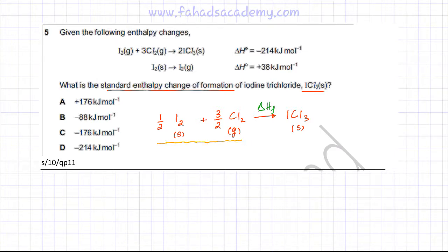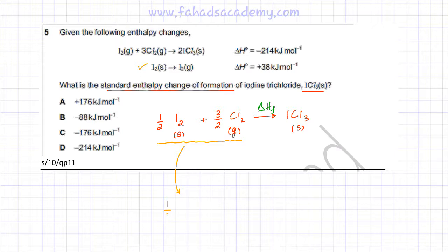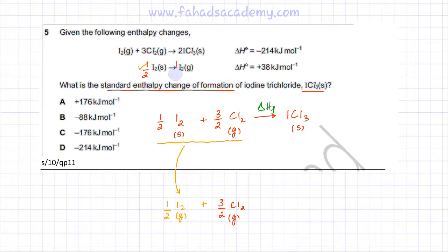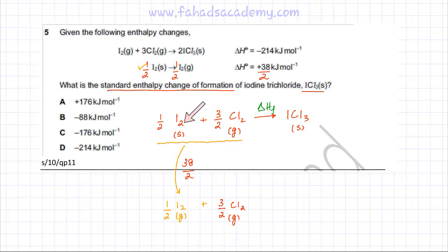Starting from the reactants, I'll use the second reaction first: iodine solid is converted into iodine gas. Since we have iodine solid in our reactants, I can convert that solid iodine into iodine gas. The 3/2 Cl₂ remains unchanged, as we're not doing anything with the chlorine molecules. We only have half a mole of iodine, so the equation is: ½I₂(s) → ½I₂(g), and the enthalpy change is also divided by 2, giving 38 ÷ 2 kJ/mol.